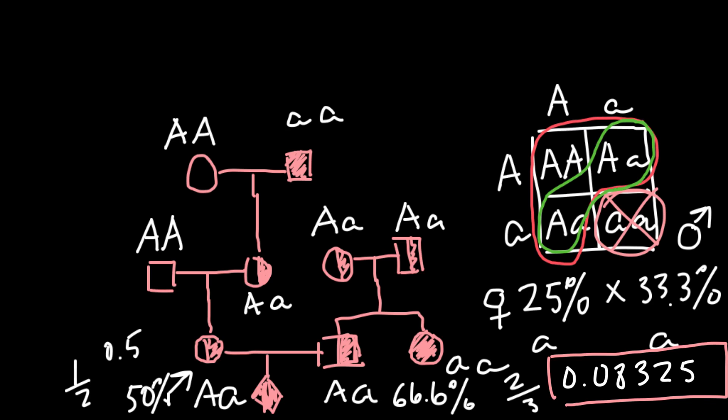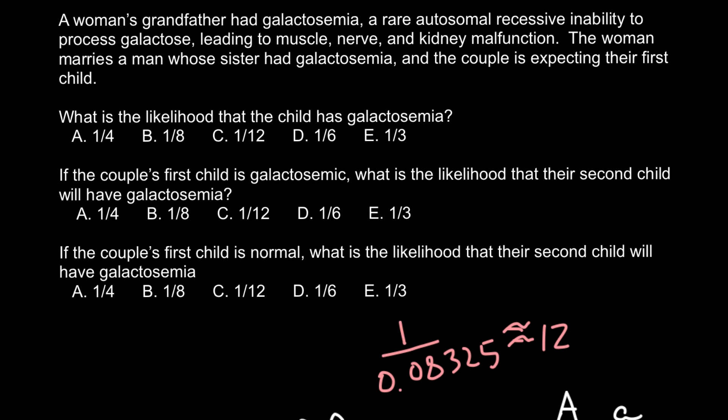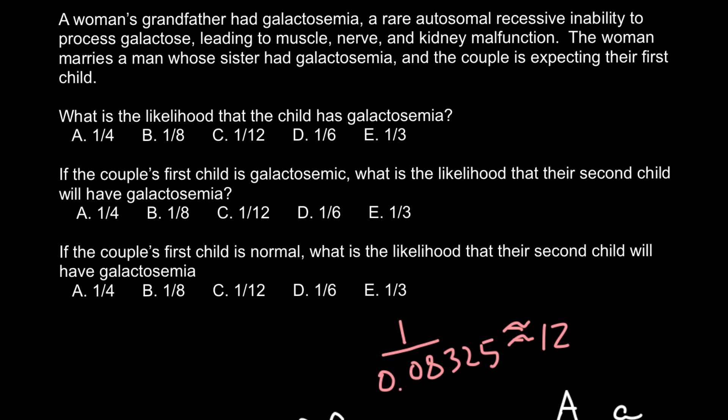Our answers are given as a fraction. 1 divided by 0.08325 gives approximately 12. So the answer is 1/12, which is about 8%. The chances that this child would inherit this genetic disorder is 1 in 12.